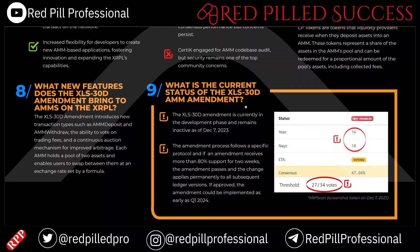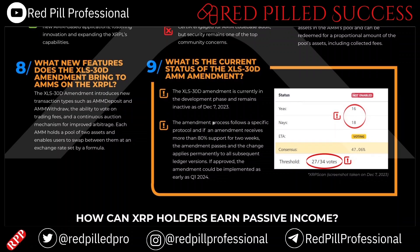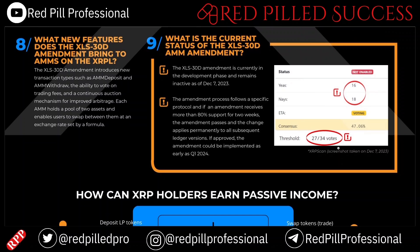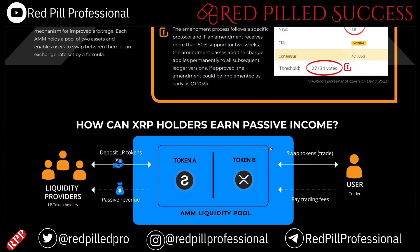What is the current status of the XLS-30D AMM amendment? It is currently in the development phase and remains inactive as of December 7, 2023. The amendment process follows a specific protocol, and if an amendment receives more than 80% support for two weeks, the amendment passes and the change applies permanently. If approved, the amendment could be implemented as early as the first quarter of 2024.